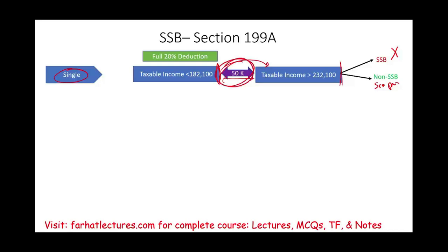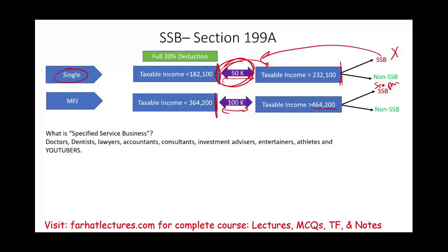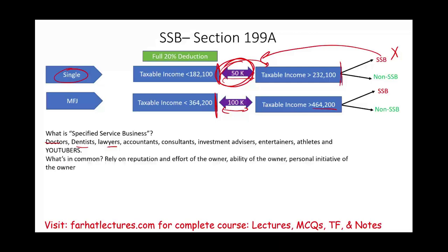Once you reach $232,100, it depends on whether you're an SSB or non-SSB business. If you're within the range and an SSB business, that's what we cover in this session. The same thresholds apply to married filing jointly, except at higher amounts with a wider range. A specified service business includes doctors, dentists, lawyers, accountants, consultants, investment advisors, entertainers, athletes, coaches, YouTubers, mentors, and financial advisors.